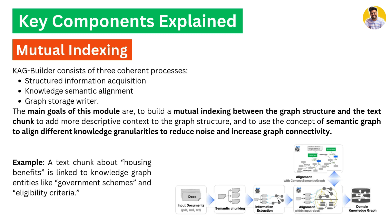A key component is called mutual indexing. When you put data into CAG, it always indexes in the best possible way so you can know the complete reasoning behind your query and answer. It consists of three parts: structured information acquisition, knowledge sentiment alignment, and graph storage. The main goal is to build mutual indexing between the graph structure and the text chunk, so chunking is always aligned with the graph structure created from that chunk.